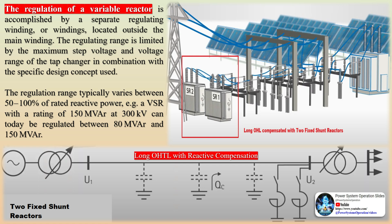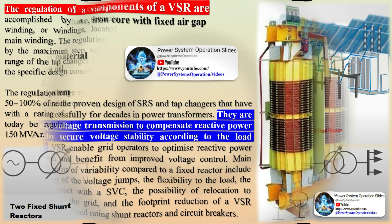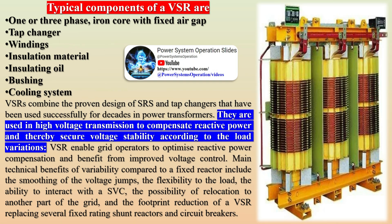For example, a VSR with a rating of 150 MVAR at 300 kV can today be regulated between 80 MVAR and 150 MVAR. Typical components of a VSR include: one or three-phase iron core with fixed air gap, tap changer, windings, insulation material, insulating oil, bushing, and cooling system.